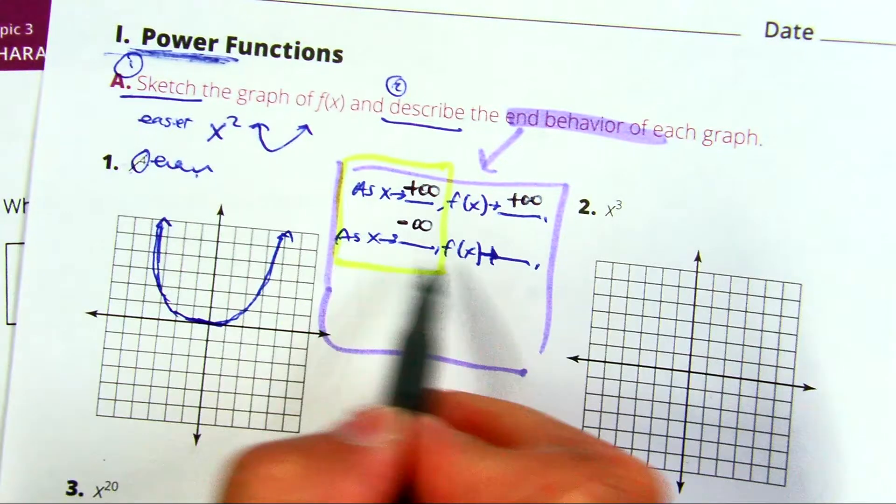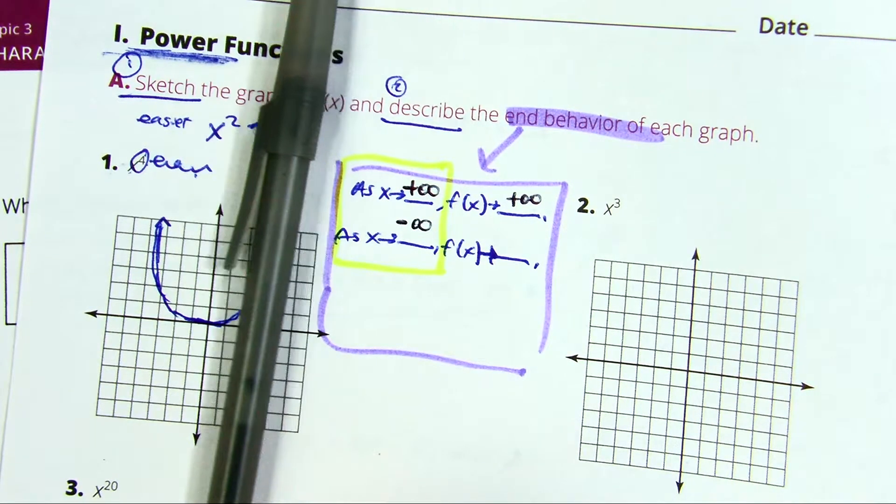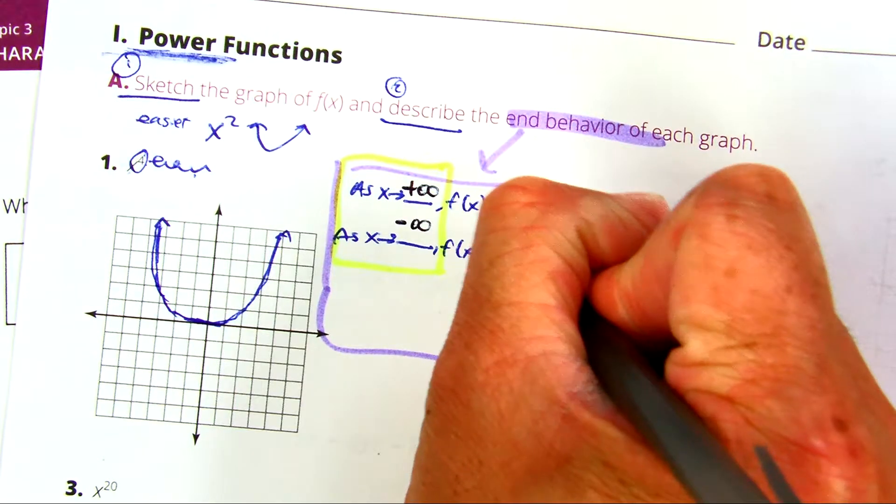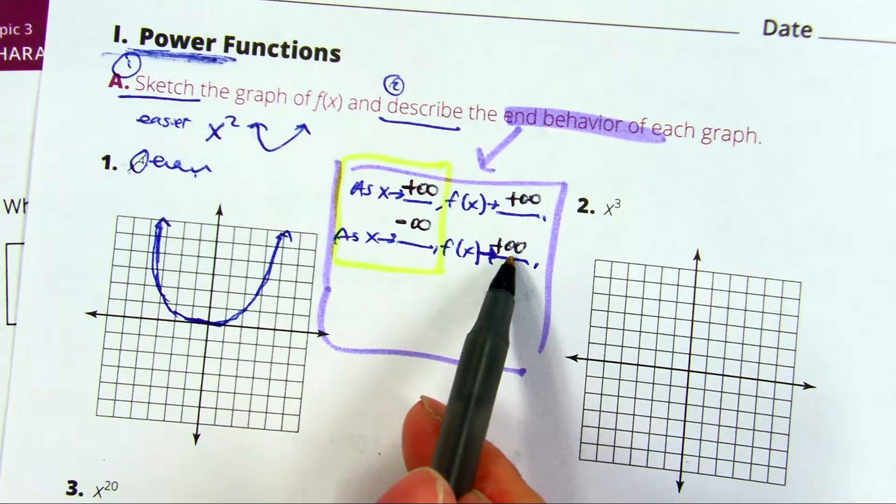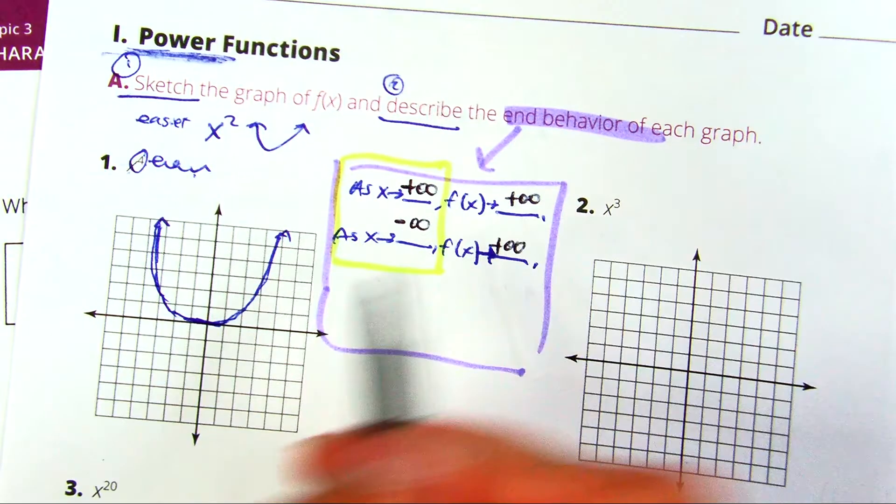And as you go towards the left, what happens? It also goes up. My end behavior is towards positive infinity. Notice how these are the same, and then my arrows are also the same.